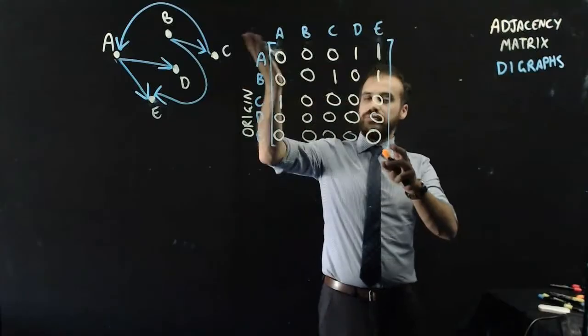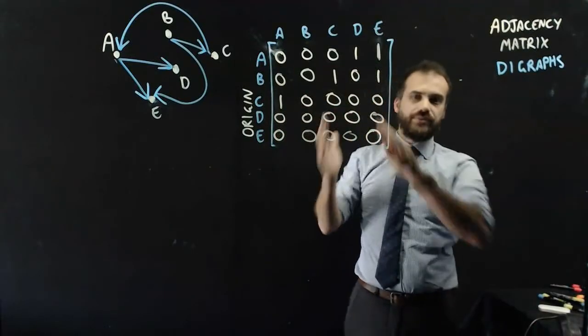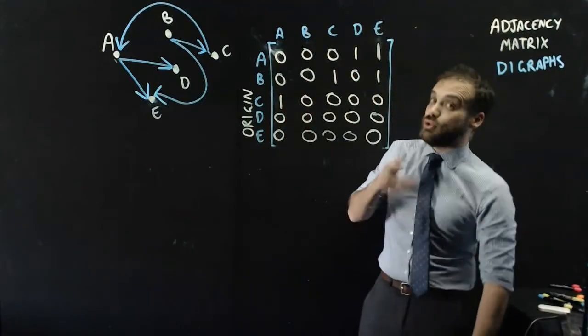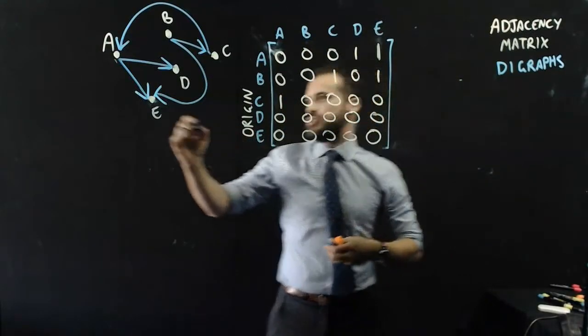Because A can eat E, but E can't eat A. You could end up in a situation where there were two arrows.